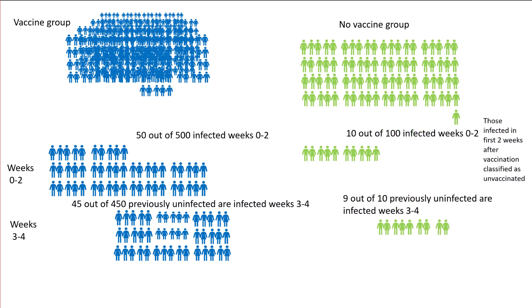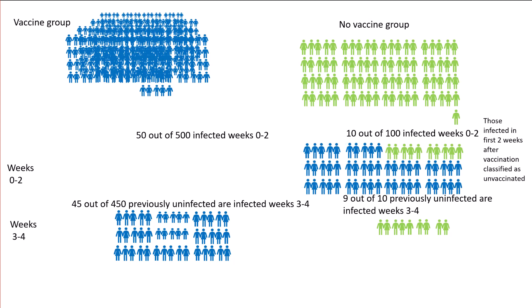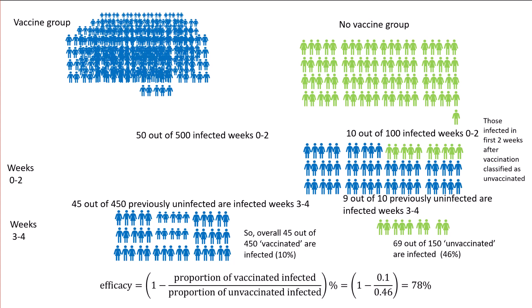Again, those infected in the first two weeks after vaccination are classified as unvaccinated, so they all get moved over. Now we have 45 out of 450 vaccinated infected — that's the same 10%. But 69 out of 150 unvaccinated are infected — that's 46%. The efficacy is already up to 78%. And of course, if we only tested a third of the vaccinated, that efficacy would go up even higher.